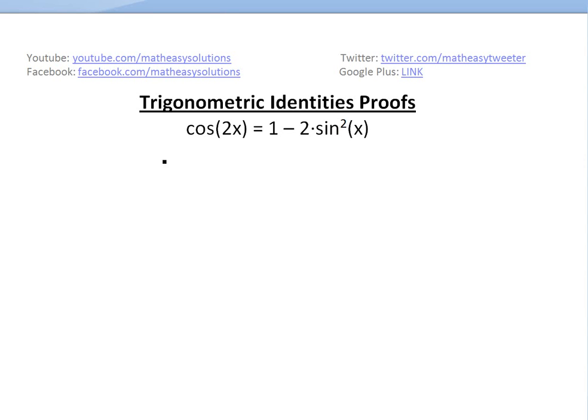Hi, it's time for another Math Easy Solution here to discuss some further trigonometric identities and prove this useful one that's used a lot: cos(2x) equals 1 minus 2 sine squared x.